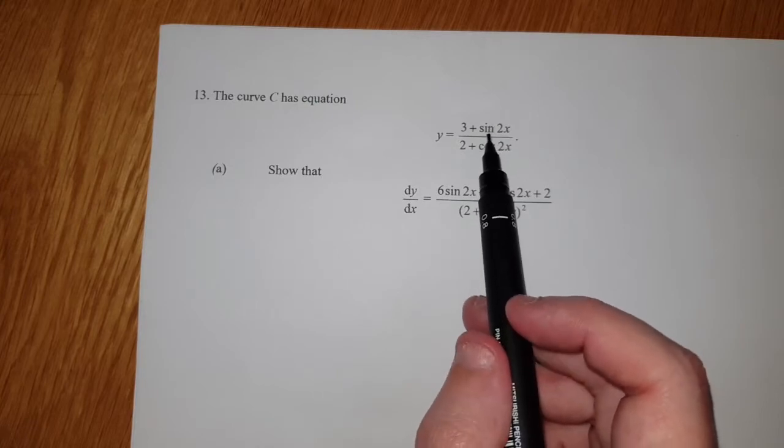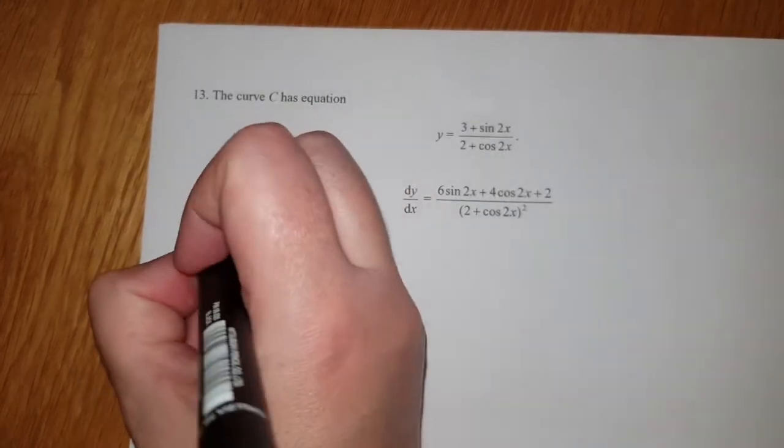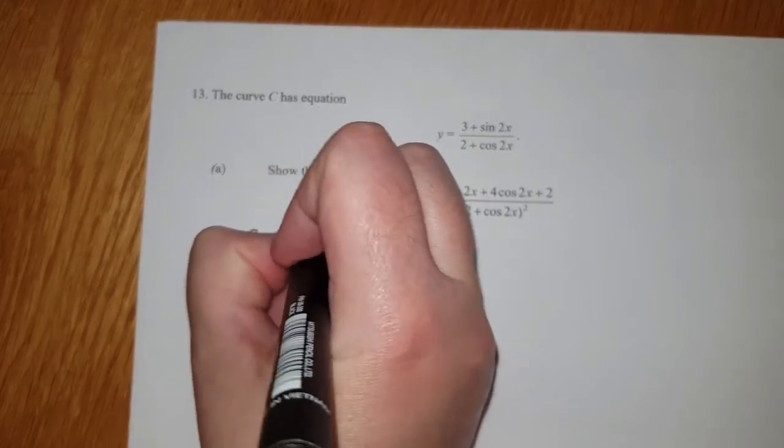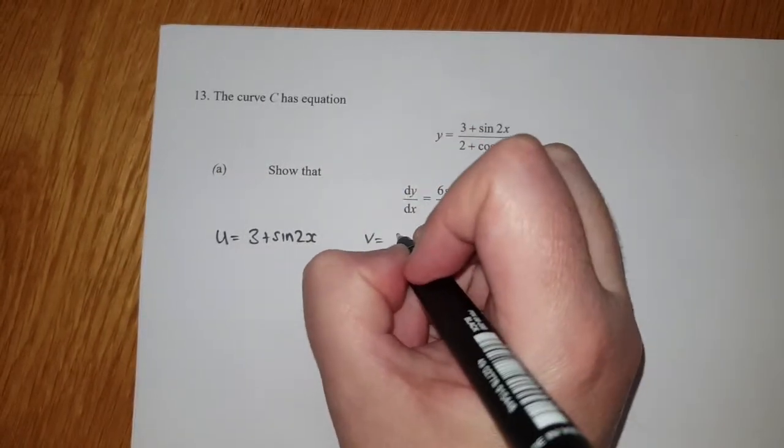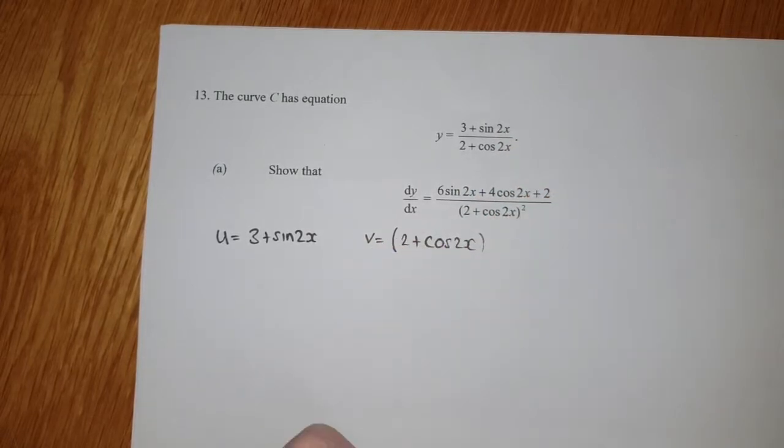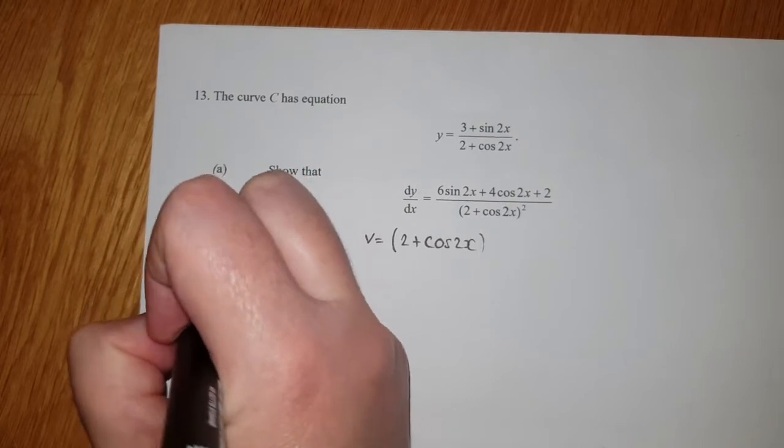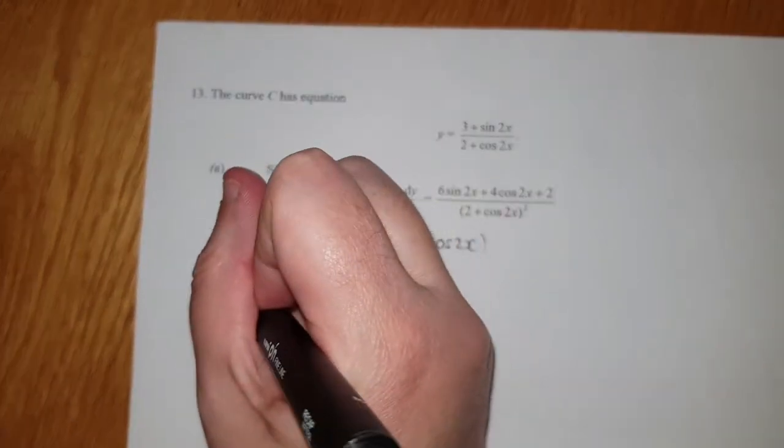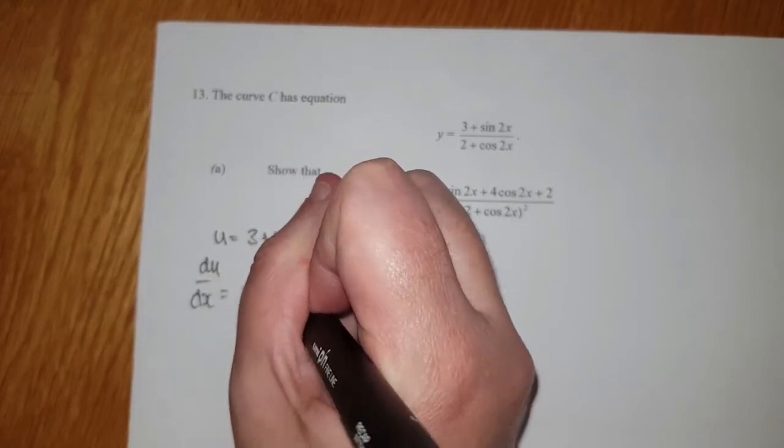This is written in quotient rule format, so the top function is u, that's 3 + sin(2x). The bottom function is v, that's 2 + cos(2x). We're going to differentiate it. If I differentiate sine, we get cos, but remember you're going to bring the 2 in front, so it's 2cos(2x).